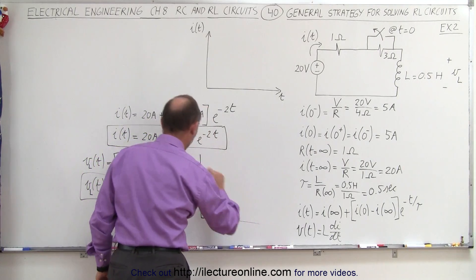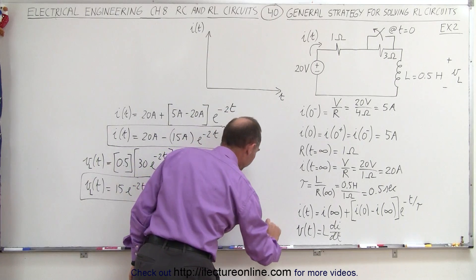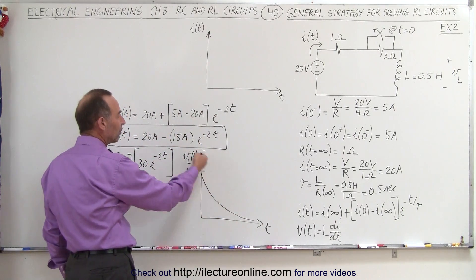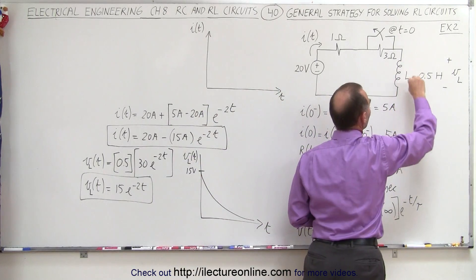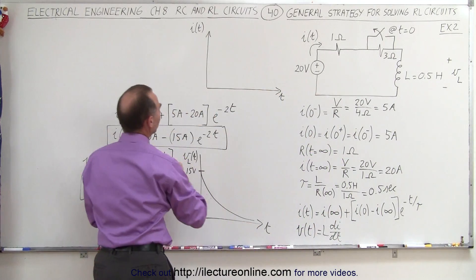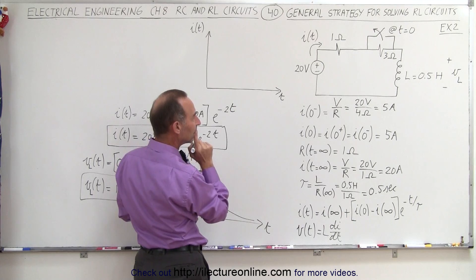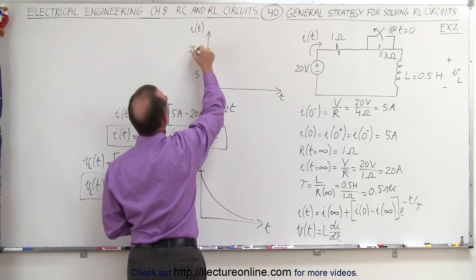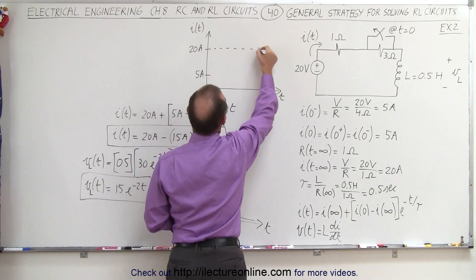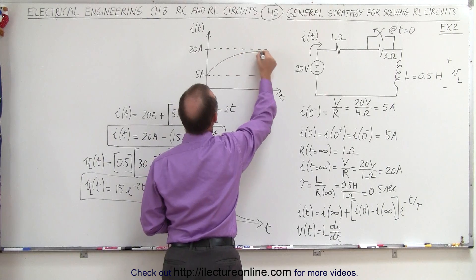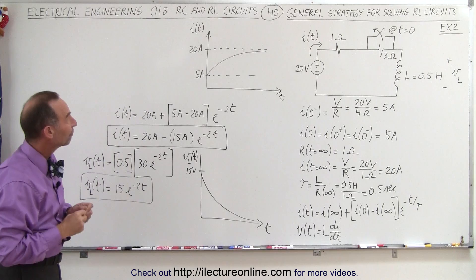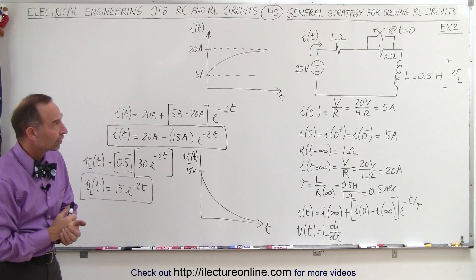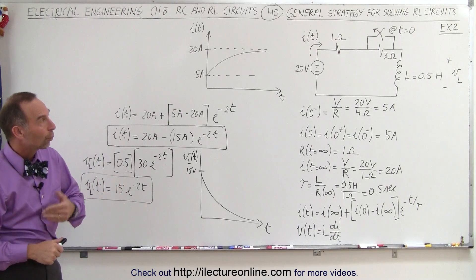If we draw a diagram of voltage across the inductor as a function of time, it starts at 15 volts and diminishes to 0 over time — written as a positive voltage since we know the positive and negative terminals and that the voltage fights the supply. As far as the current is concerned, the initial current is 5 amps and the final current is 20 amps. The current increases from 5 to 20 amps as the resistance decreases. And that's how we figure out the specifics about the current and voltage in an RL circuit with a sudden change in applied voltage or current.